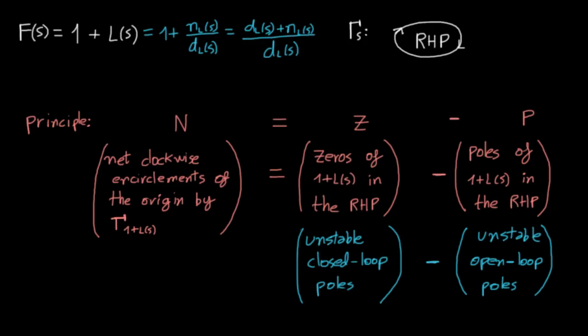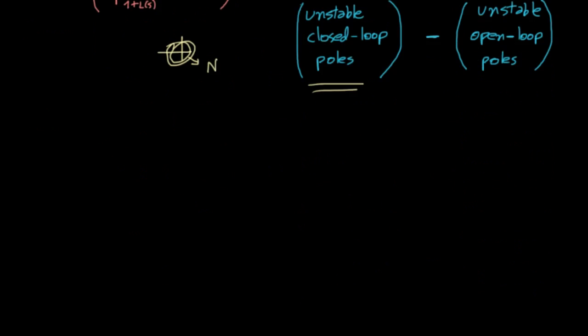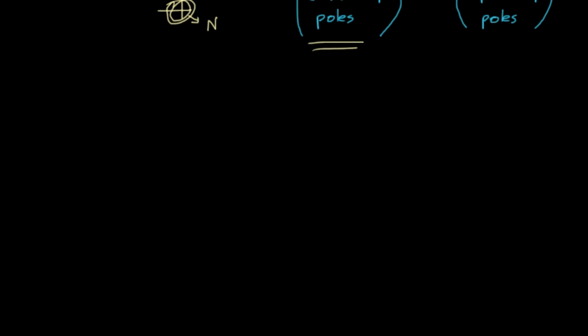So, in order to find z, the number of unstable closed-loop poles, all we need to do is to define a trajectory encompassing the whole right-half plane, pass that trajectory to the function 1 plus L, and count how many times the image trajectory encircles the origin.